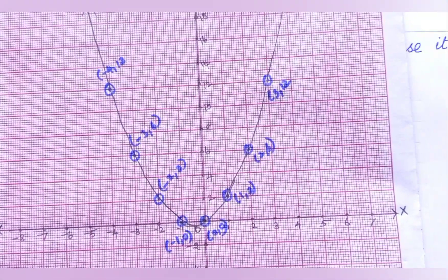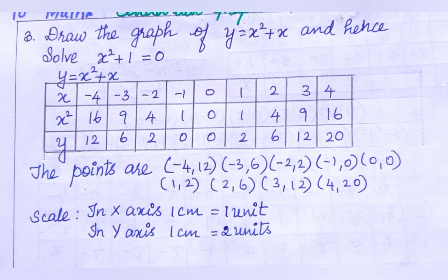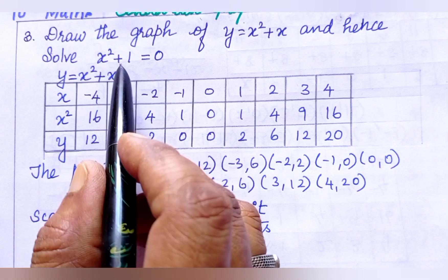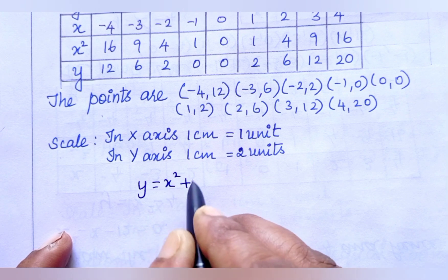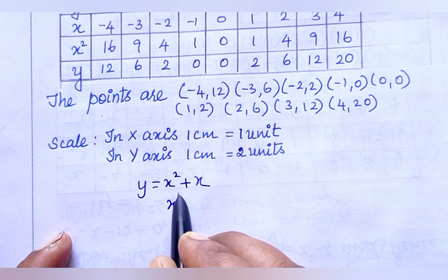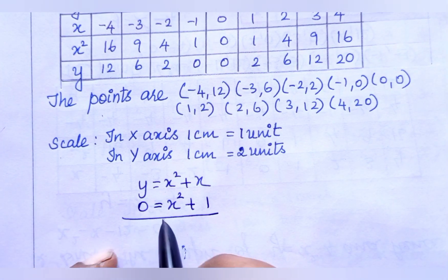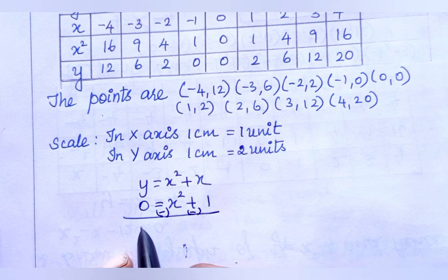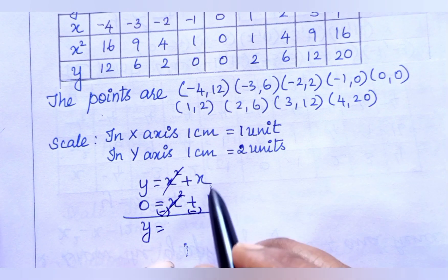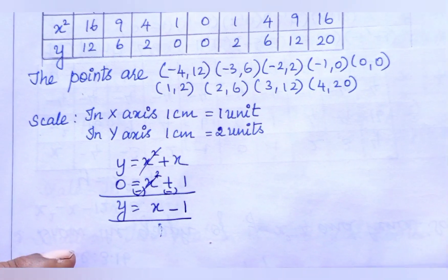Now we are going to solve the equations as given. For y equals x squared plus x, and x squared plus 1 equals 0, we subtract. Subtracting, we change the signs: y minus 0 is y, x squared cancels, and we get y equals x minus 1. This is the linear equation we obtained by subtracting.